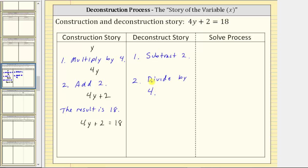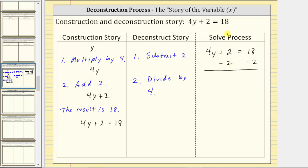Now we will perform these two operations on both sides of the given equation to solve the equation. Beginning with four y plus two equals 18, we first subtract two on both sides of the equation. Remember, as long as we perform the same operation on both sides of the equation, the result is an equivalent equation. On the left side of the equation, we have plus two minus two, which simplifies to zero.